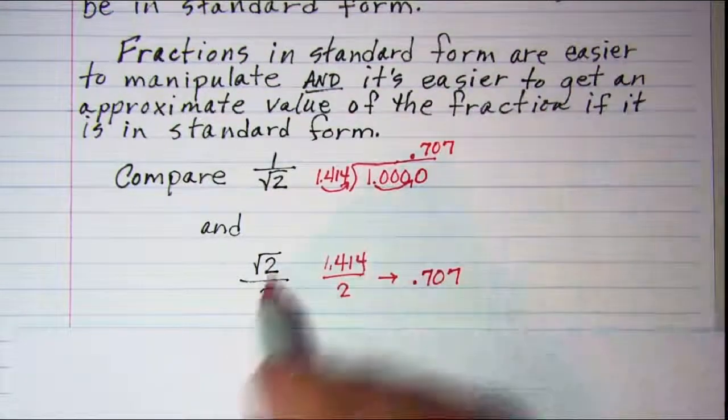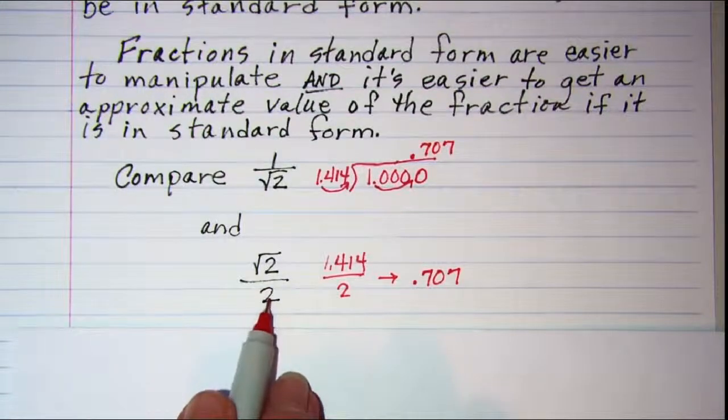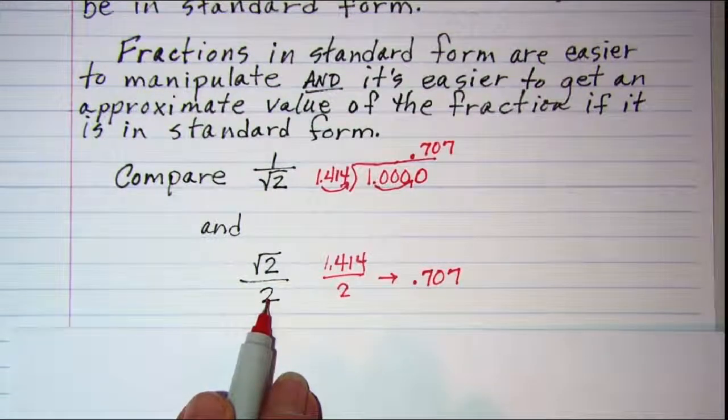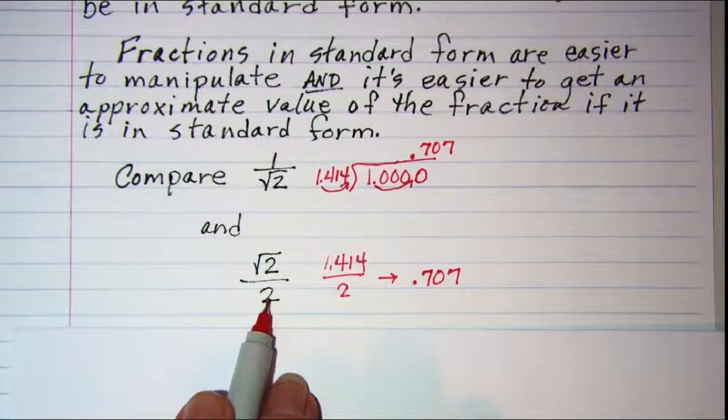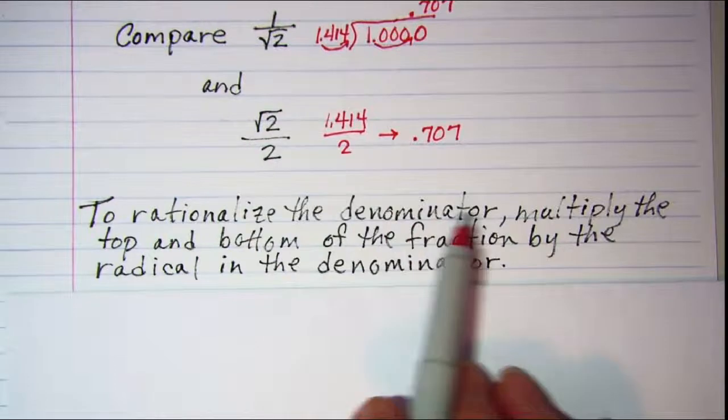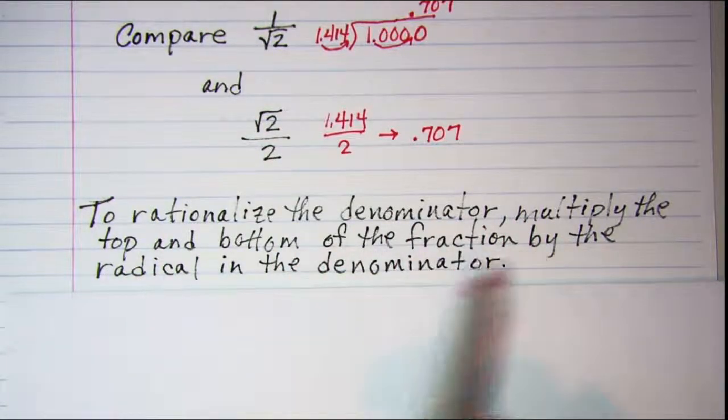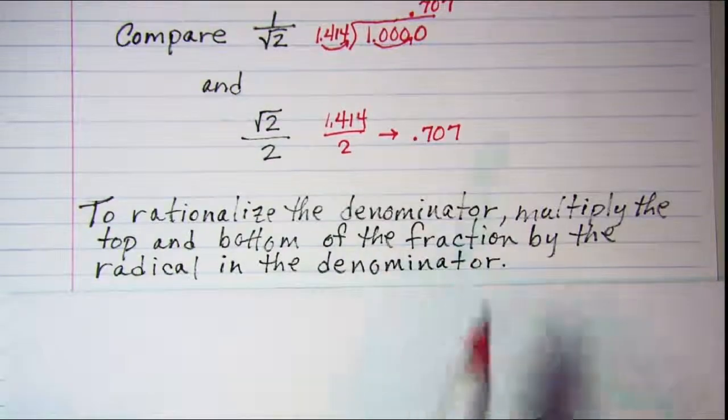So this is the preferable fraction. Notice that the denominator is a rational number. To rationalize the denominator, multiply the top and the bottom of the fraction by the radical that's in the denominator.